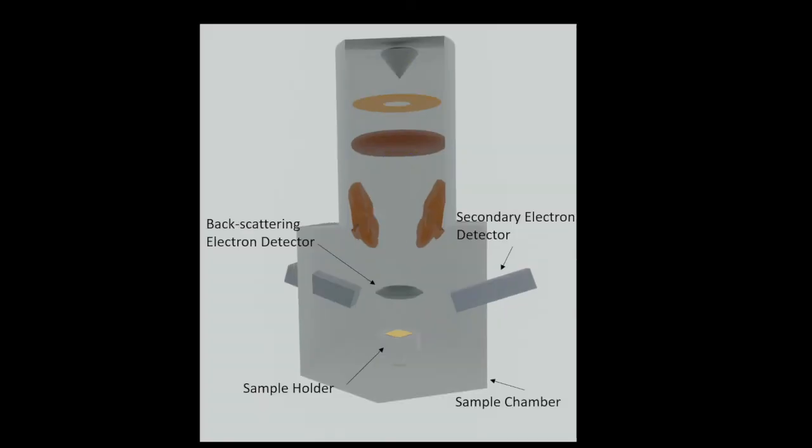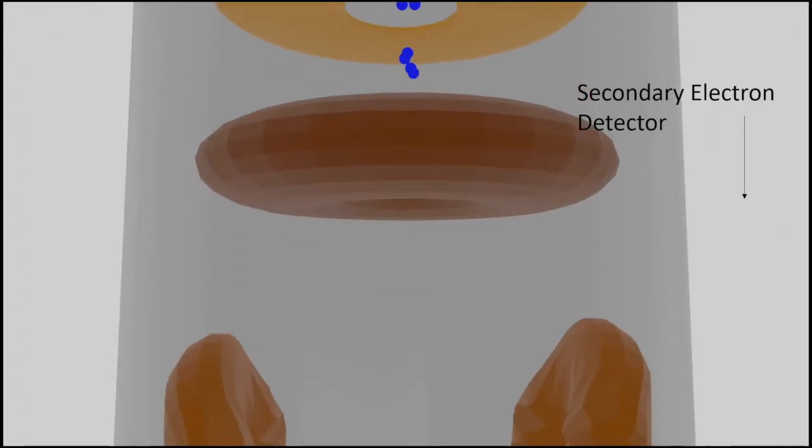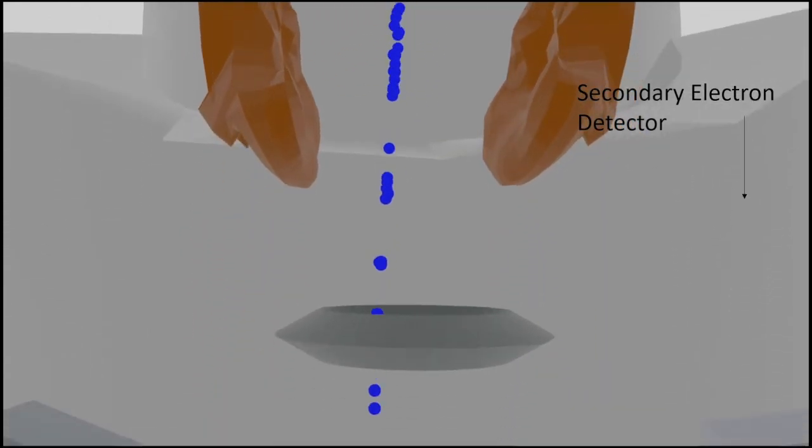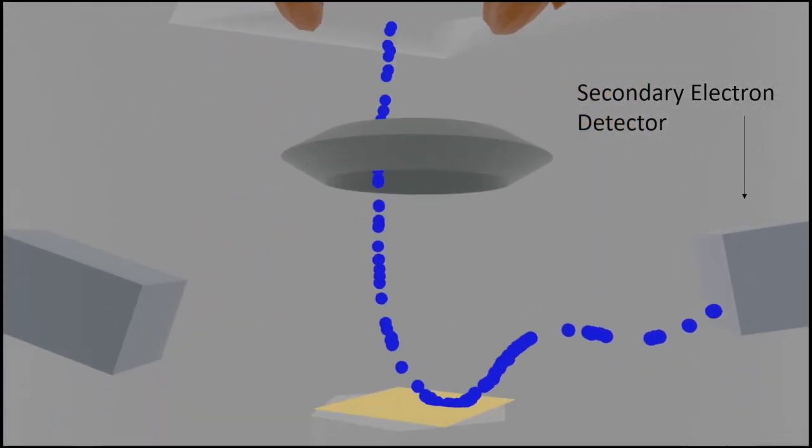Moving on to the bottom half of the SCM, the SCM has a sample chamber and a sample holder. The sample holder is where the sample is placed to be analyzed. Now the sample chamber is where the detectors are held, such as the secondary electron detector and the backscattering electron detector. The secondary electron detector is for the secondary electrons that come out of the sample when being hit by an electron beam. Those electrons are then picked up by the detector giving unique signals that are analyzed by the computer to give a surface image.